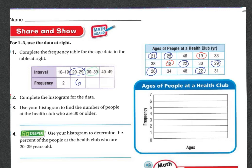Let's do 30 through 39. 1, 2, 3, 4, 5. Now let's do 40 through 49. 1, 2. There were 2 of them.